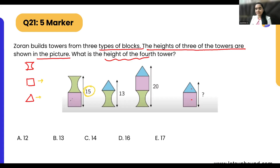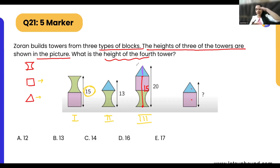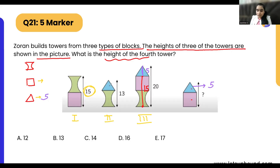Looking at the first tower, it's made up of the green shape and a square with height 15. The third tower also has the green shape and a square plus a triangle, with total height 20. So the green piece plus square equals 15, meaning 15 plus the triangle height equals 20. That gives us the triangle height as 5.